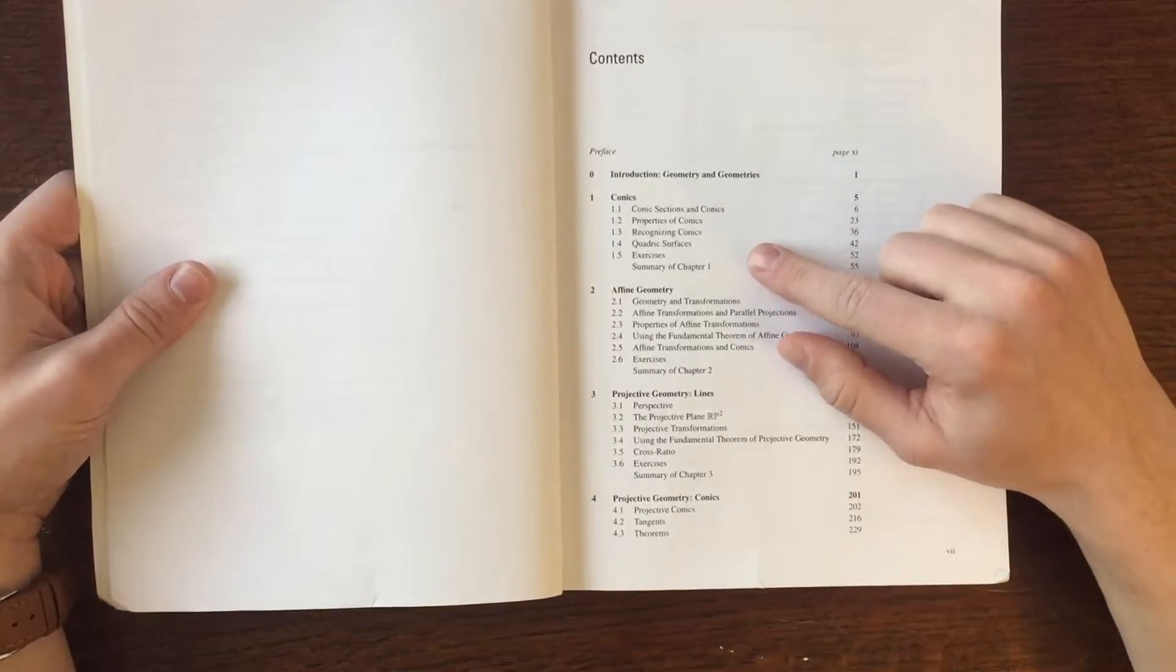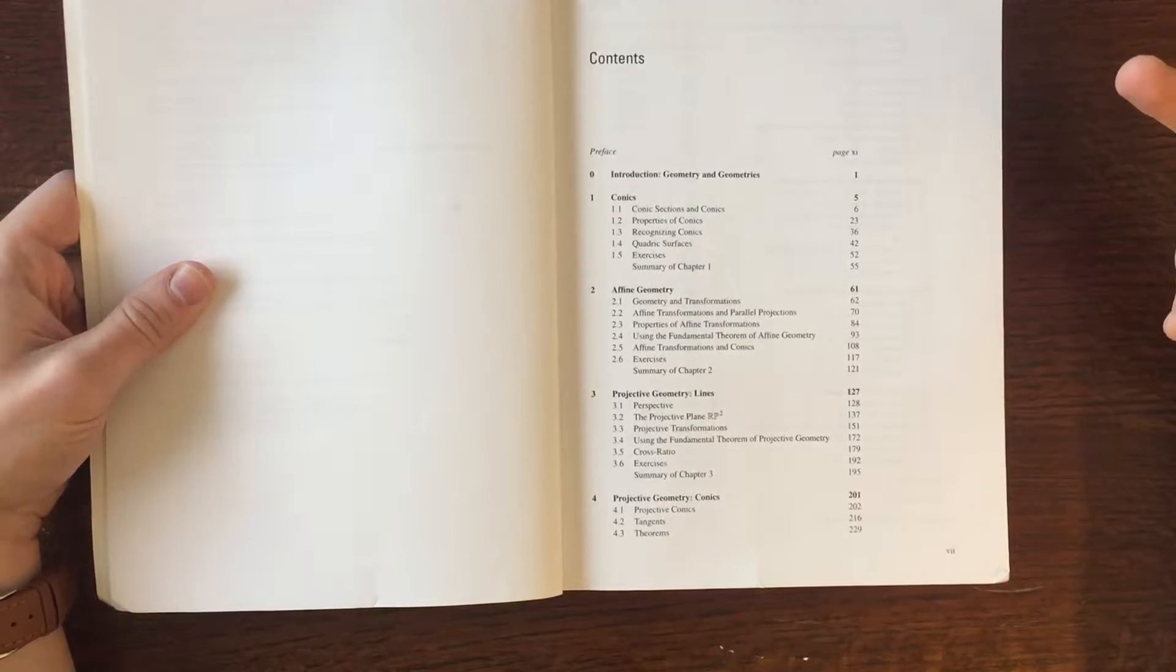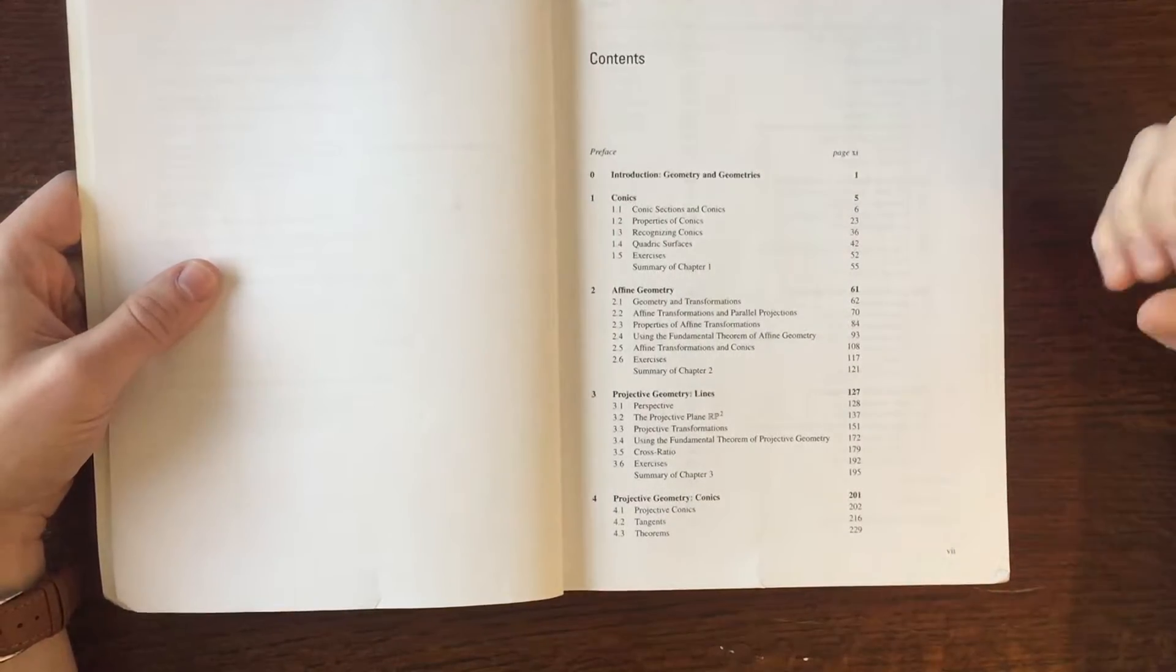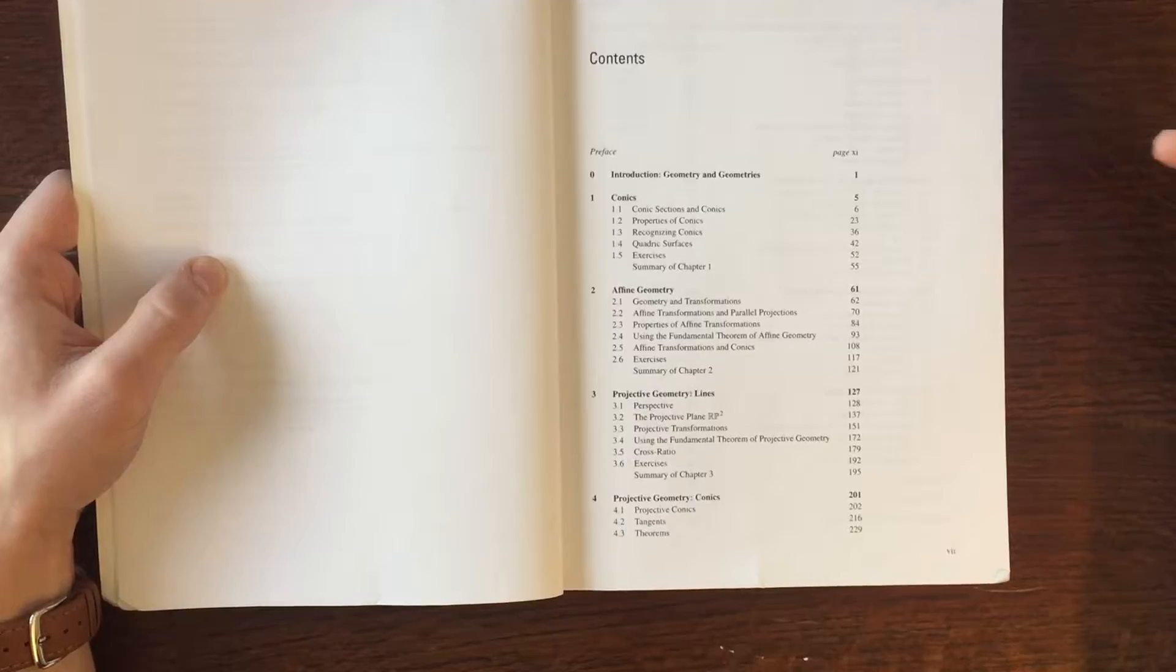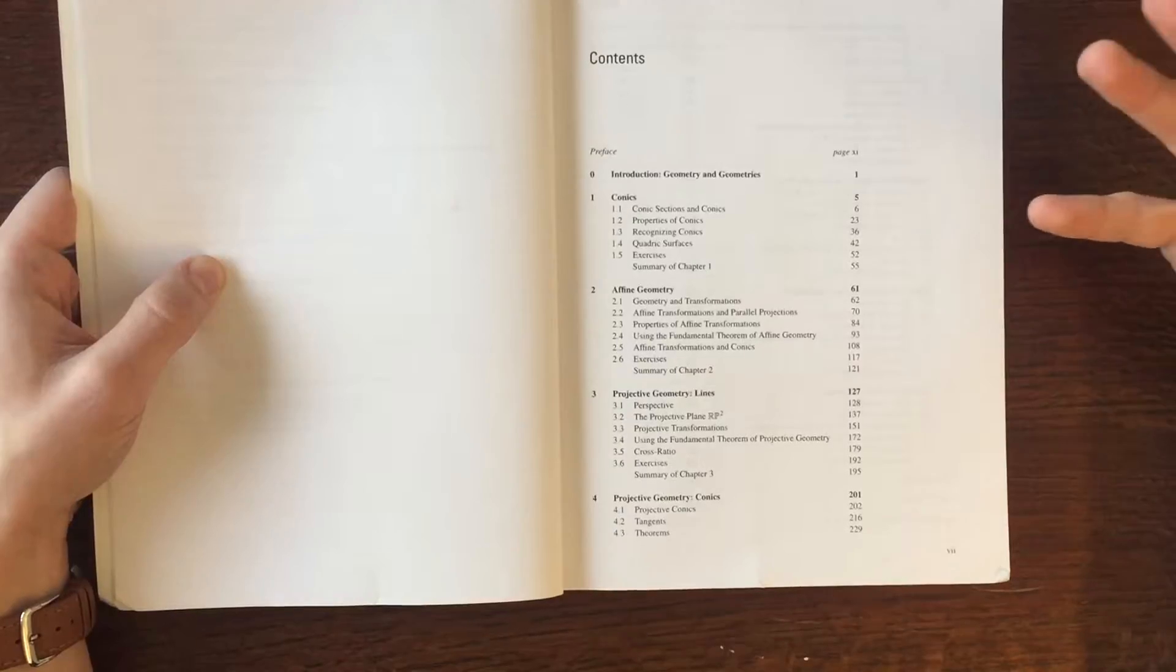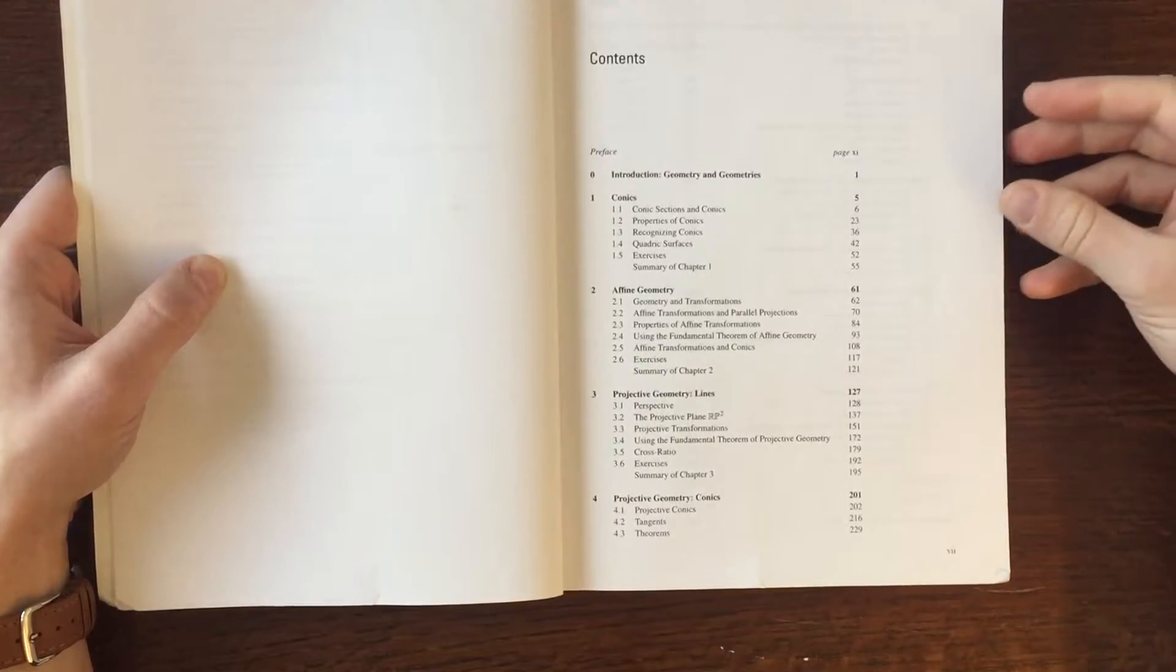It starts off by talking about conics, a really important concept in geometry that applies to many other areas of study. Conics are things like hyperbolas, ellipses, and parabolas.